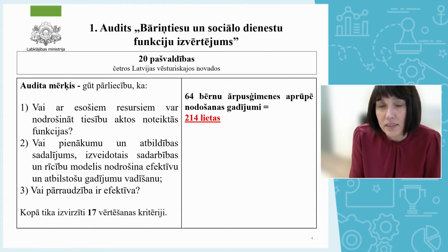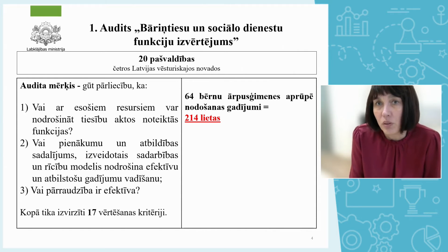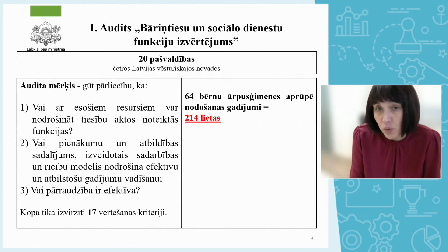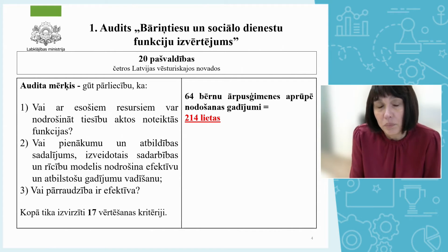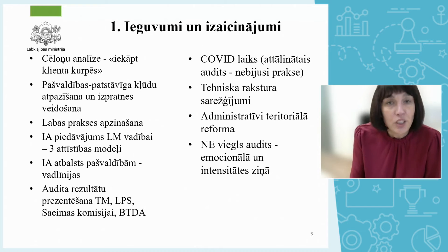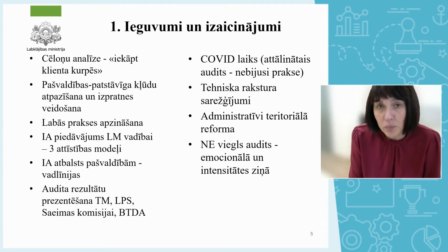Together, we came up with 17 evaluation criteria. This evaluation was carried out in 20 municipalities — we wanted to have small, medium, and big municipalities as well as state cities, trying to cover all the districts of Latvia. We looked through 214 cases — those are cases where biological parents were deprived of parental rights, meaning their child was placed in an orphanage or facility, and we examined how efficient that process had been.